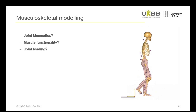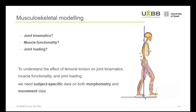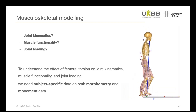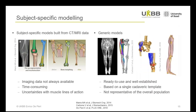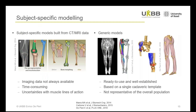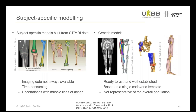These are all questions that we can address from musculoskeletal modeling. But in order to understand the effect of femoral torsion, we need to account for subject-specific morphometry, anatomy, and kinematics. Subject-specific models can be built from CT or MRI data; however, this imaging data is not always available, and building these models from imaging is a time-consuming process characterized by difficulties and uncertainties, such as in defining the muscles' lines of action.